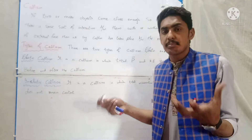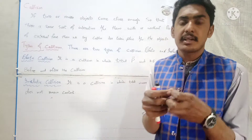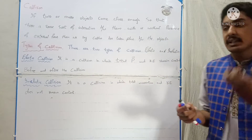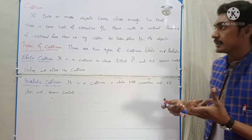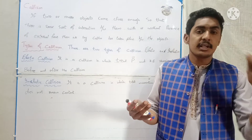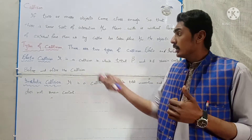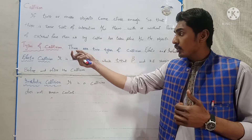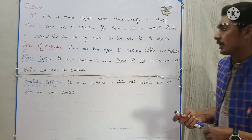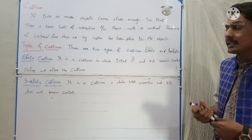Collision can be taken by two bodies. How could we do collision? We could have elastic and inelastic. There are two types of collision: elastic and inelastic.